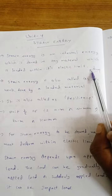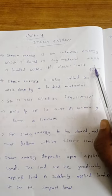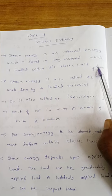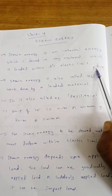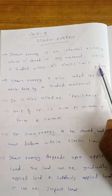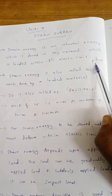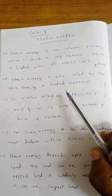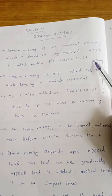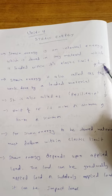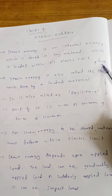Suppose if we take a simply supported beam and there is some load P acting on it. Due to this load there is some deflection. Whenever we remove the load within the elastic limit, it will come to its original position because of the internal energy stored in the body. Whenever there is a load applied, deflection is formed as well as some internal energy is formed. Due to that internal energy, when the load is removed, it will come to its original position.